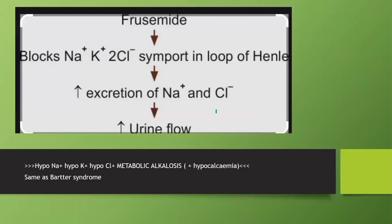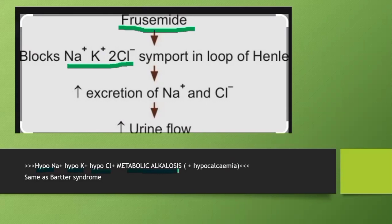Now the mechanism of action of furosemide: furosemide blocks the sodium-potassium-2-chloride symport channel in the loop of Henle, increasing excretion of sodium chloride along with water, increasing urine flow and causing diuresis. The biochemical picture after furosemide use: there will be hyponatremia, hypokalemia, hypochloraemia, and metabolic alkalosis.